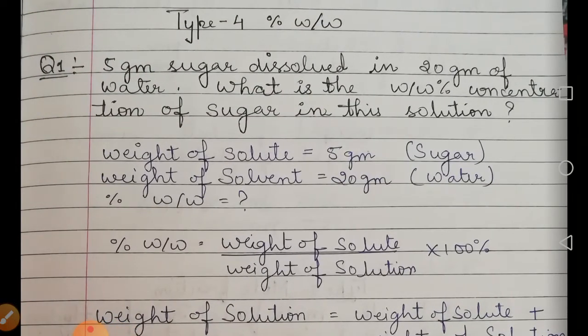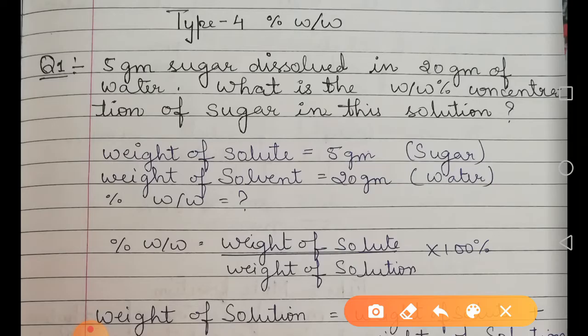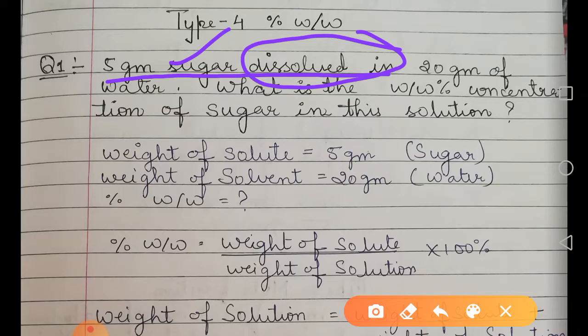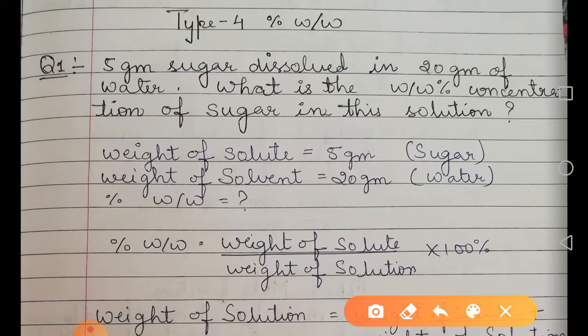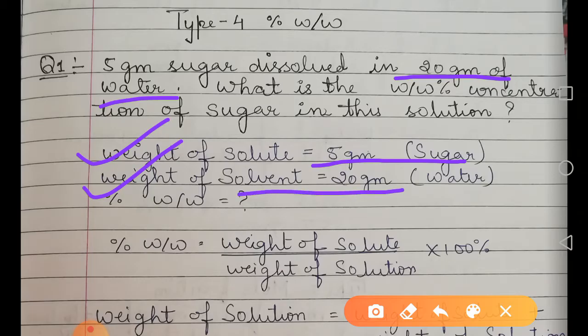Question: 5 grams of sugar dissolved in 20 grams of water — what is the weight by weight concentration of sugar in this solution? From day one I am telling you that first we note down what is given. 'Dissolved in' tells us that sugar is the solute. So weight of solute = 5 grams (sugar), and weight of solvent = 20 grams (water).